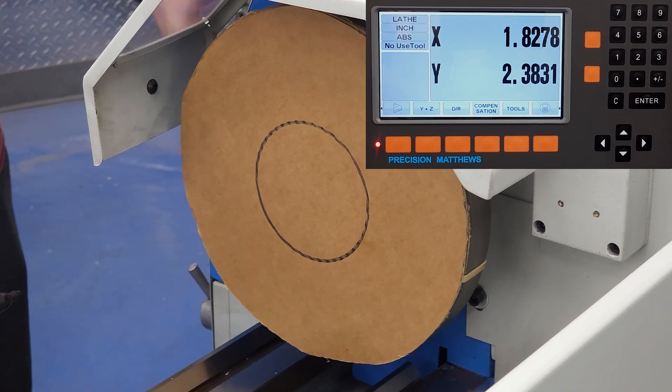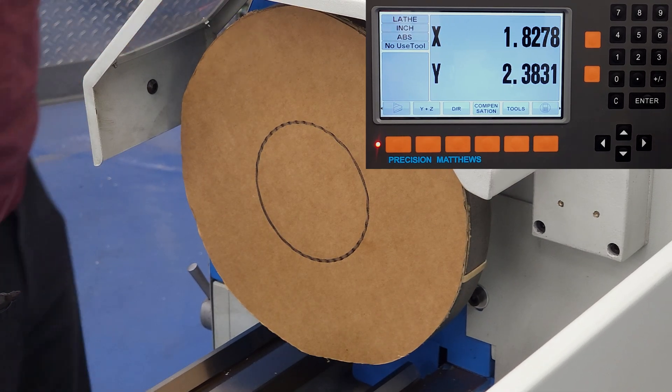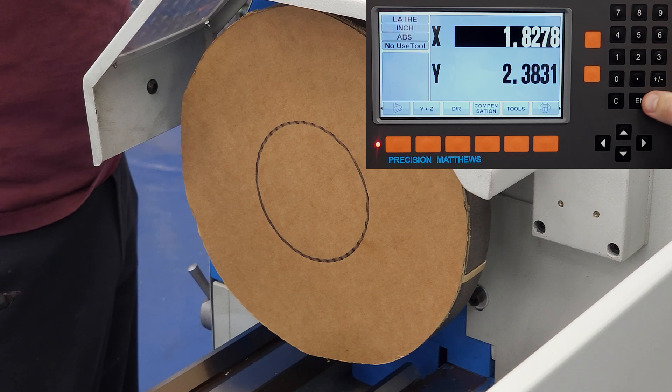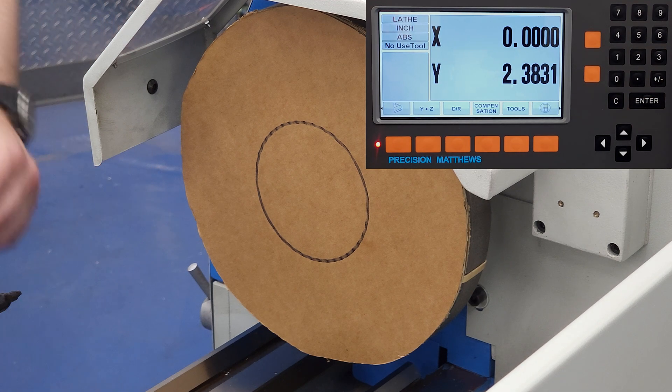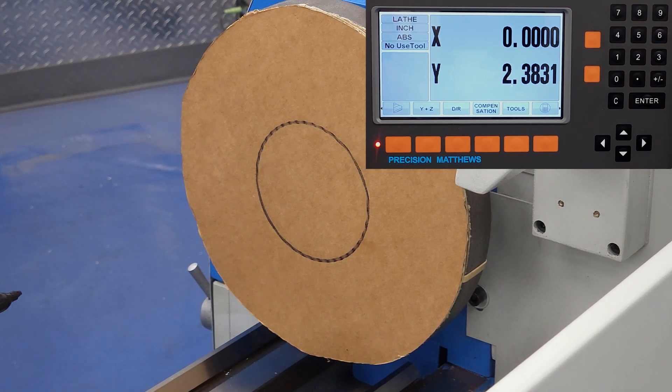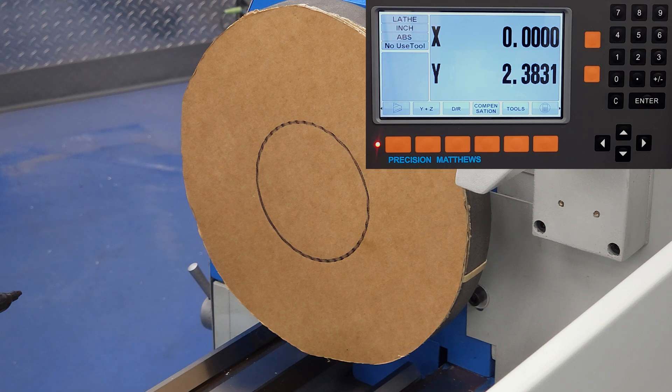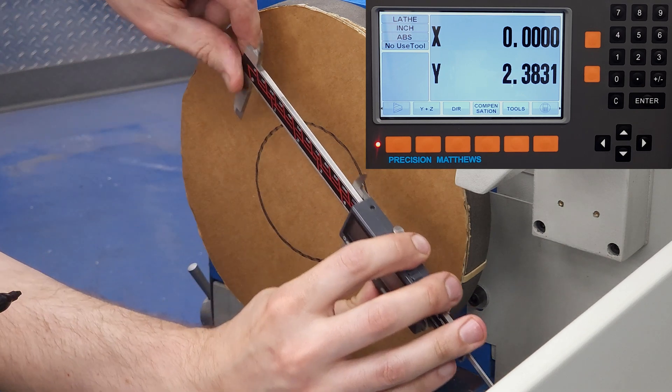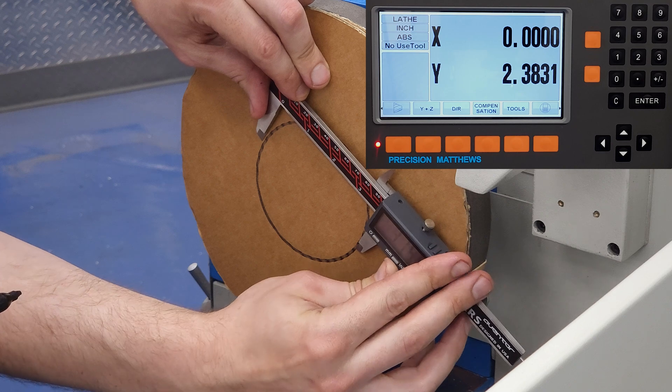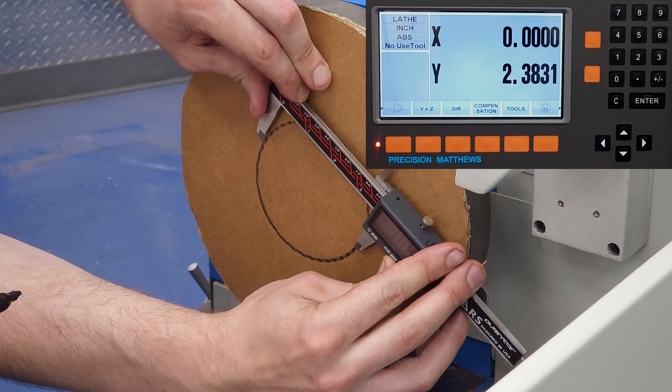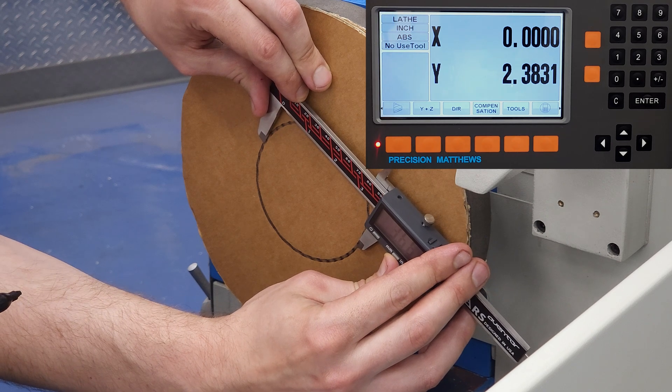Again, we start with our simulated skim cut. And this time, instead of entering the measured diameter, we will just zero out the x-axis on the DRO. Then I measure the diameter produced by that skim cut. In this case, it measures 3.673 inches.